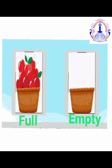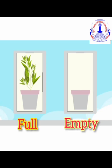The basket is full of cherries, the other basket is empty. One pot is having a plant, the other pot is empty.